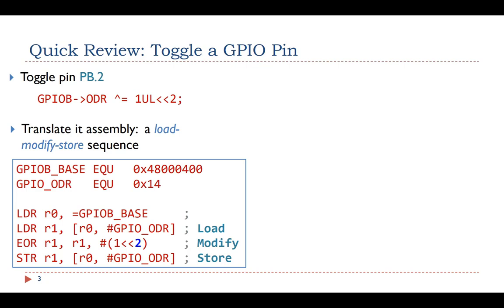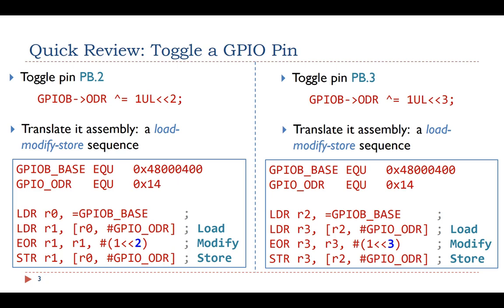First, load the entire current ODR value; then flip the target bit; and finally store the entire updated value back to the ODR register. Similarly, to toggle the output PB3, we need to perform a load, modify, store sequence of operations.